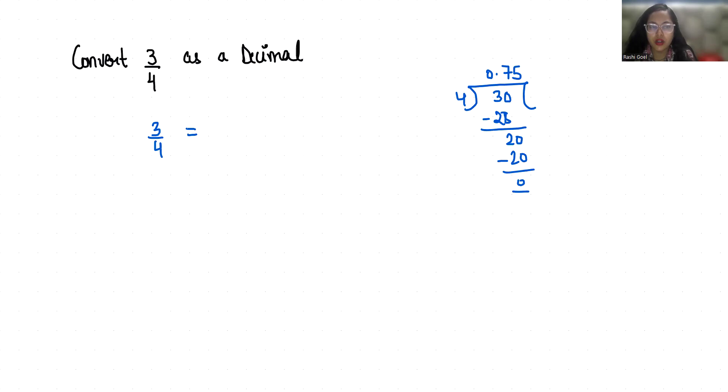So this is our method 1 and method 2 is you can convert your denominator as 1 by 10 or 1 by 100 or 1 by 1000. That means basically in terms of zeros with 1 and so on. So now 3 by 4, in table of 4, 10 does not come but 100 comes.